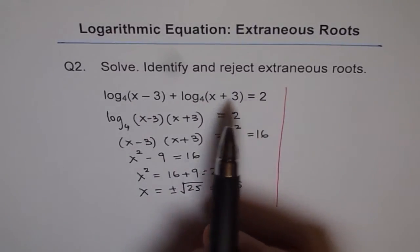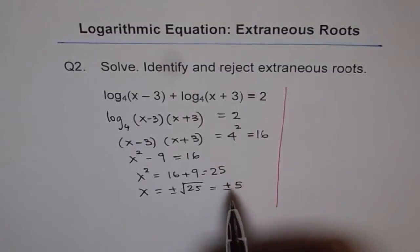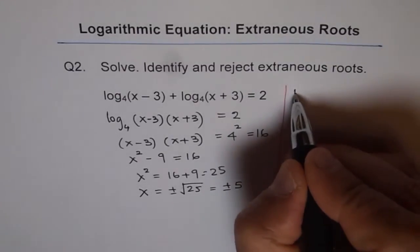So the ultimate domain is x should be greater than 3. So anything which is less than 3 is not part of our solution. So we get an extraneous root.